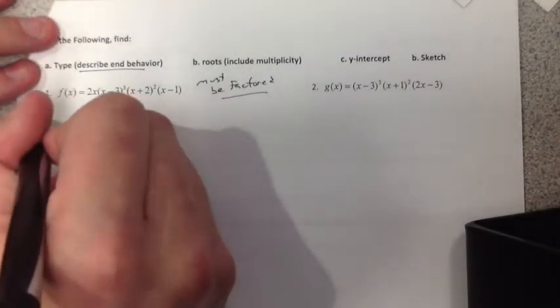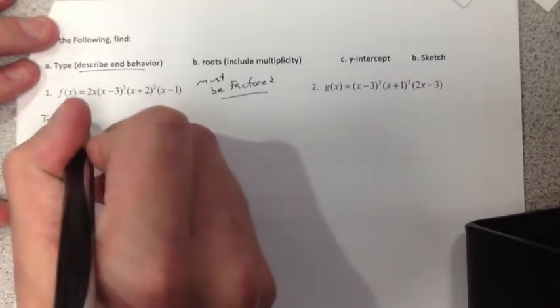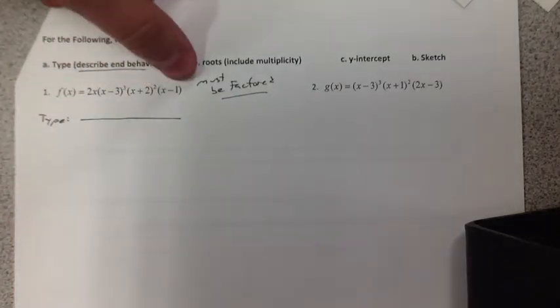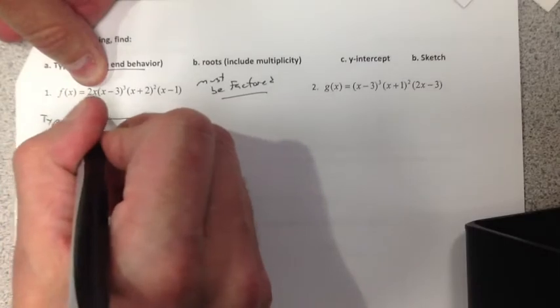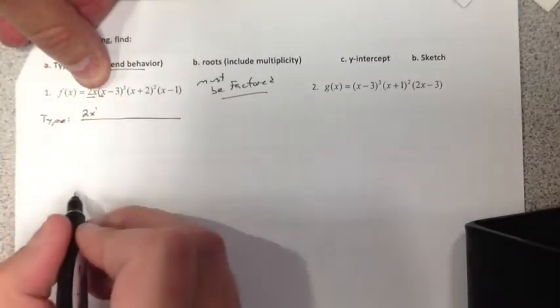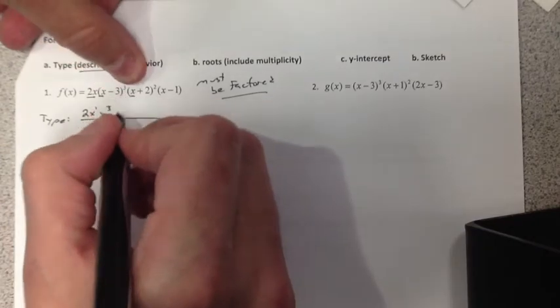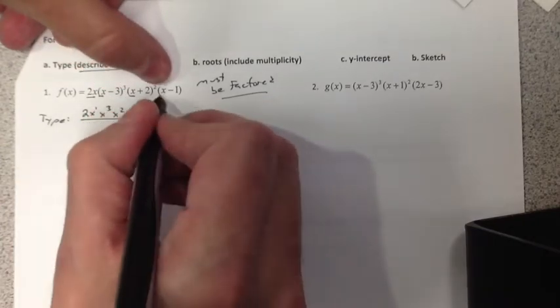So if I look at the first one, I've got to get the type. Again, the type is very simple. With each factor, we look at the highest degree. The first one, this first factor, is just 2x to the first. Here we have x, but it's going to be cubed eventually, so it's x cubed. Here we have another x, but it's squared, and here we have an x to the first.